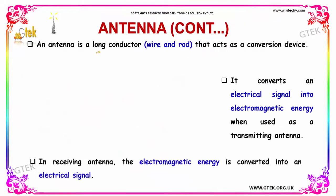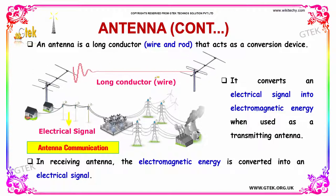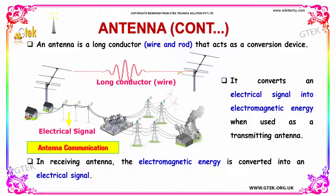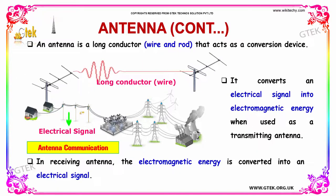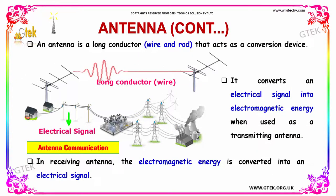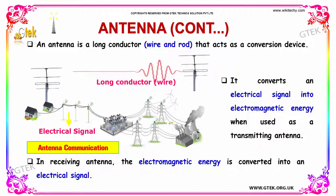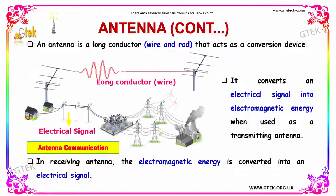An antenna is a long conductor wire and rod that acts as a conversion device. It converts an electrical signal into electromagnetic energy when used as a transmitting antenna. In a receiving antenna, the electromagnetic energy is converted into electrical energy.